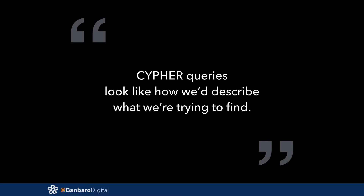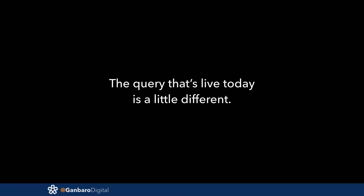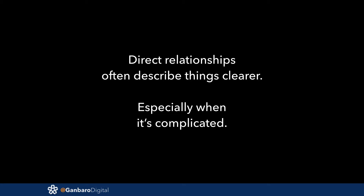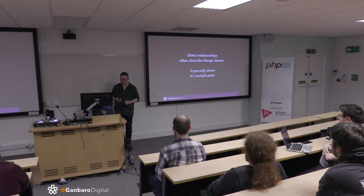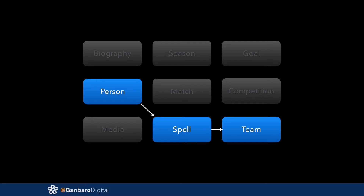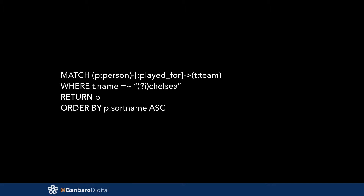Cypher queries look like how we describe what we're trying to do. One thing we've done is collapse the path we're traversing — we've gone with direct relationships instead. This moves away from how people expect you to use a graph system, but we found it simplified things enormously. We decided partway through to create a direct relationship between people and the team, because that pool of people includes managers and players who played for the club and then came back as managers.